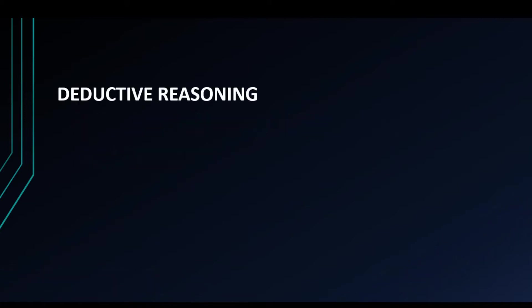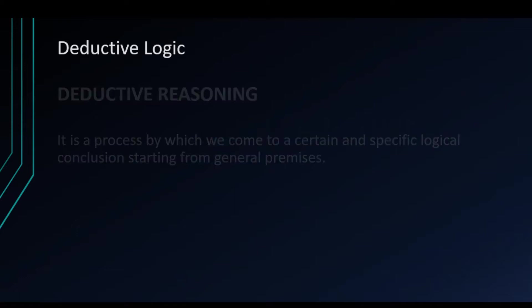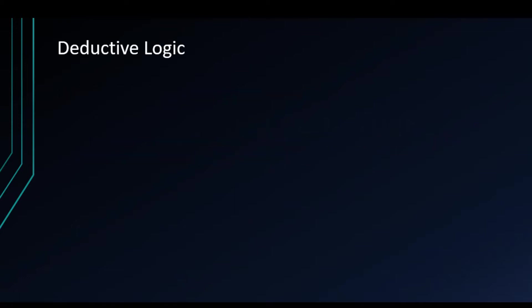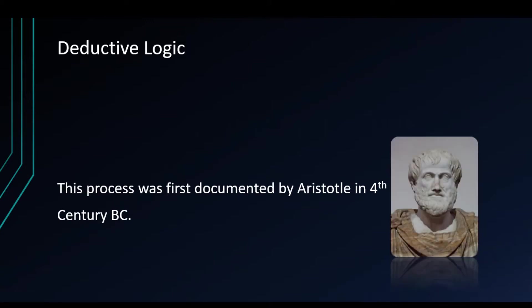Deductive reasoning is a process by which we come to a certain and specific logical conclusion starting from general premises. Another name for deductive reasoning is deductive logic. This process was first documented by Aristotle in the 4th century BC.